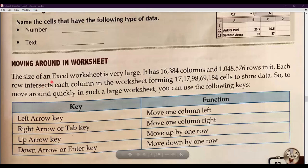Now we will understand moving around in a worksheet — that means navigating our worksheet. Navigate means accessing the sheet in different directions: right, left, up, down. The size of an Excel worksheet is very large; we can use very large worksheets. So we need to navigate it. An Excel worksheet has 16,384 columns.